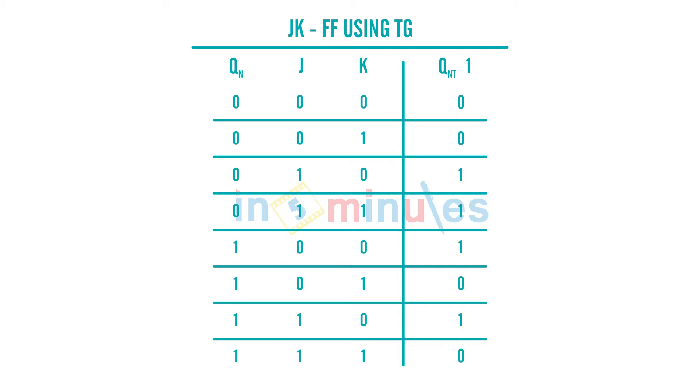From the truth table, if you see properly what we understand is when my QN is equal to 0, my output QN plus 1 is nothing but equal to J. If you see, this is what's happening.